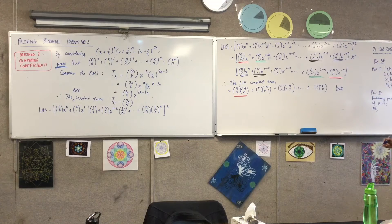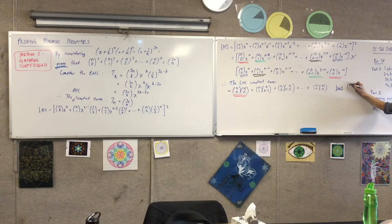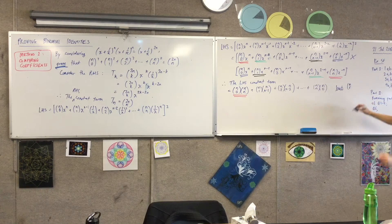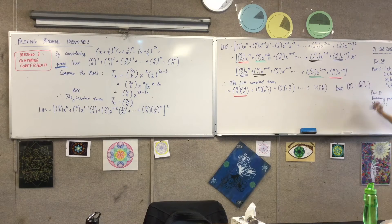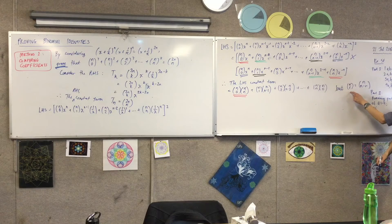Because of the symmetry identity. And I should write that because I'm trying to prove this thing, right? ncr is equal to ncn minus r. So if, for example, I put zero in here.